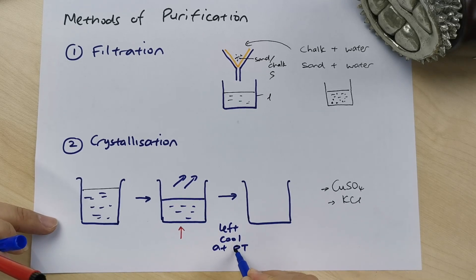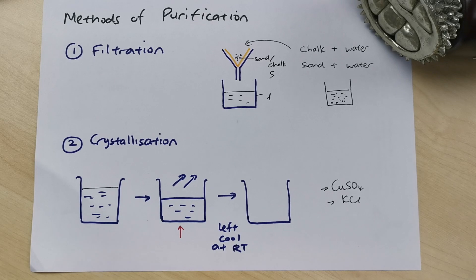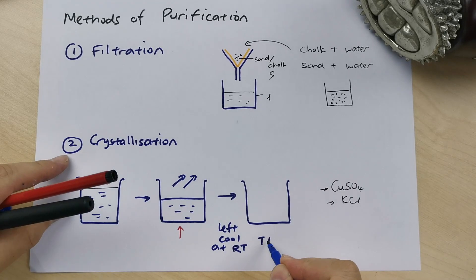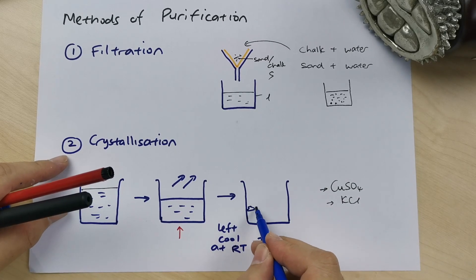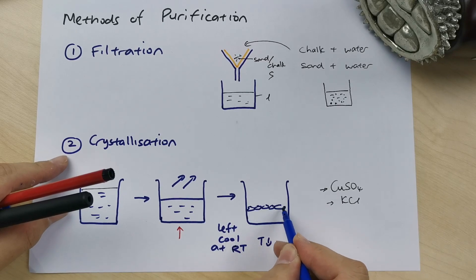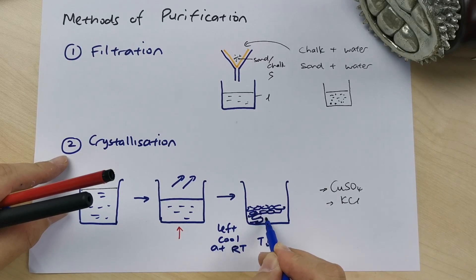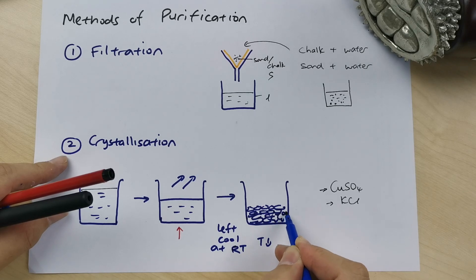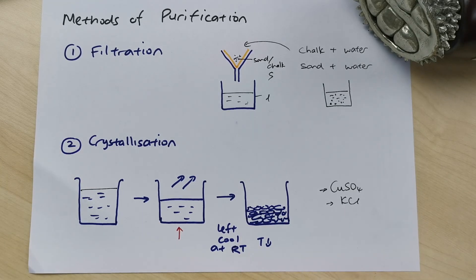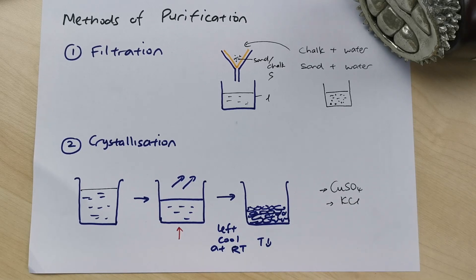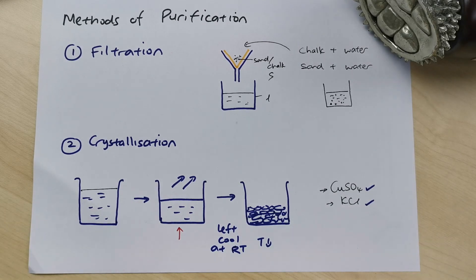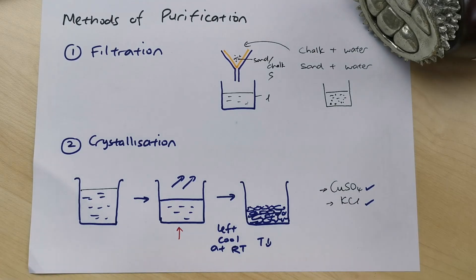Once you leave it to cool at room temperature and the temperature drops a bit, you can see crystals forming. There will be some crystals and some remaining water, so you then filter it. Remember: left to cool, small temperature drop, crystals form — that's crystallization. Whenever you see CuSO₄ or KCl and they want you to produce crystals, use crystallization.